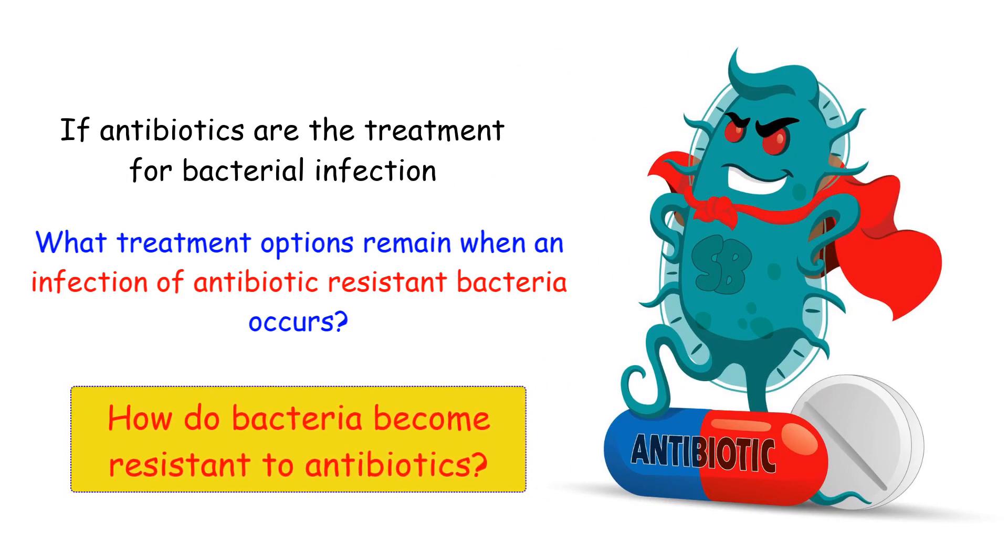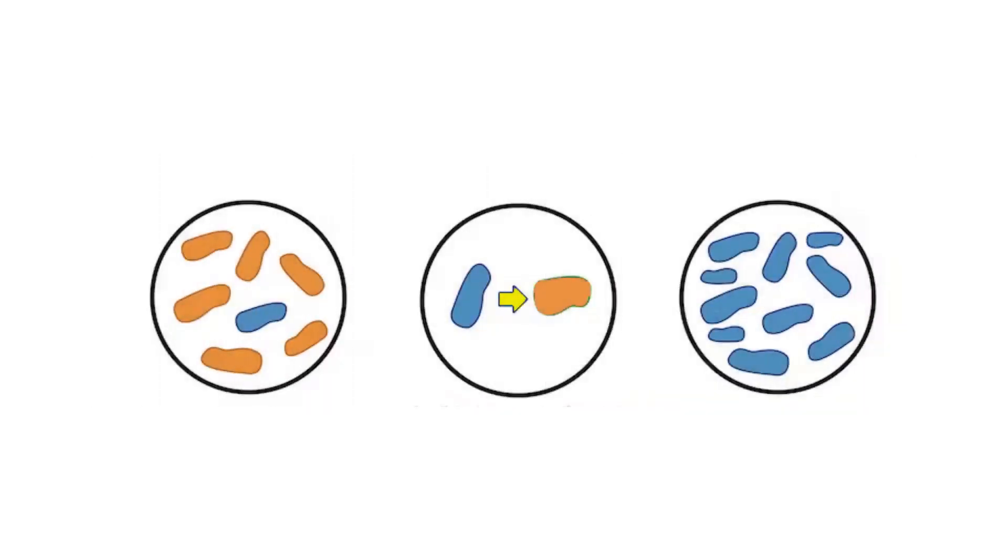Also, how do bacteria become resistant to antibiotics? Bacteria are able to become resistant to antibiotics partially because of the speed at which they can pass genetic material to each other.